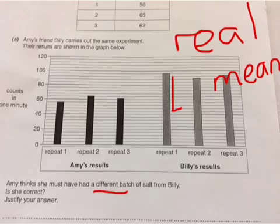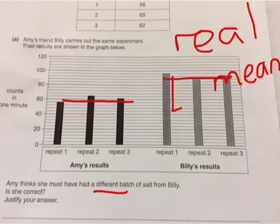The mean of Amy's results is 61, shown here on the graph. The mean of Billy's results is 86, which is up here. You can see from these two sets of data that the means are very, very different. So that's the first mark — the means are different.